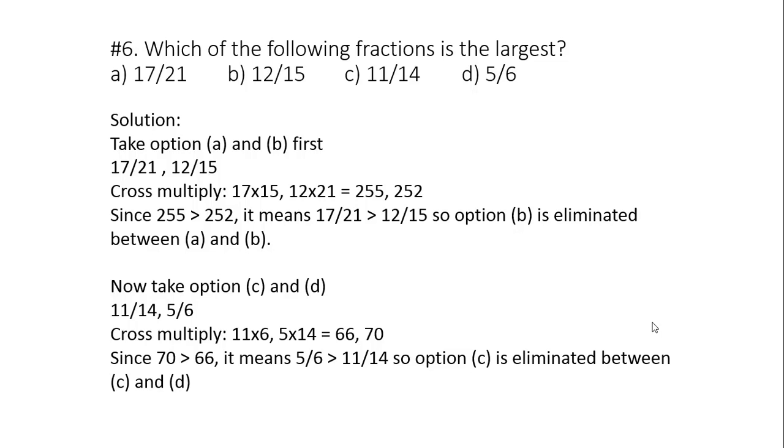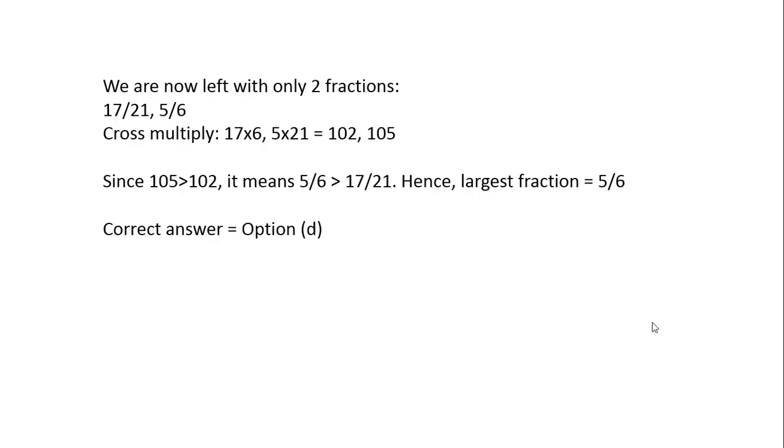Now we are left with only two options, A and D: 17 by 21, 5 by 6. Again we cross multiply. We get 17 into 6, 5 into 21, that is 102 comma 105. Clearly 105 is larger. It means 5 by 6 is the largest fraction. Hence the correct answer is D.